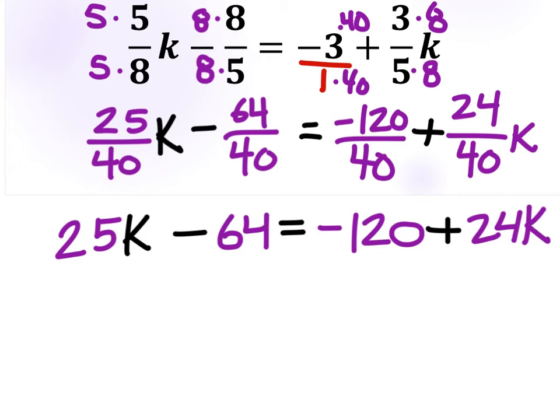Now what we can do is we can play the switch and stay game or just use principles of equality. In class, everyone preferred principles of equality. So that's what I'm going to do. Now, before we do that, I'm just going to choose to put the K's on the left and the numbers on the right. That's arbitrary. It's very random. There's no other reason than that's just where I want them. Okay?